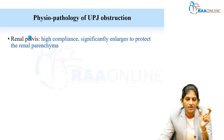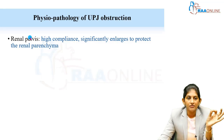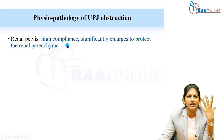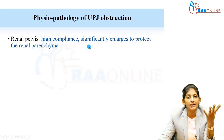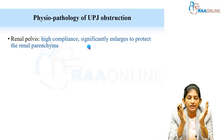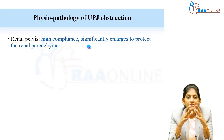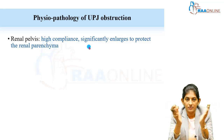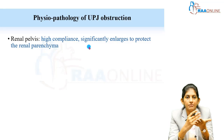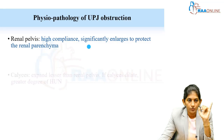First, we always look at the renal pelvis in the report. If the renal pelvis is dilated, that is the definition of hydronephrosis. The renal pelvis is highly compliant — it enlarges to protect the renal parenchyma. So the renal pelvis essentially jeopardizes itself to protect the renal parenchyma and preserve corticomedullary differentiation.